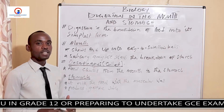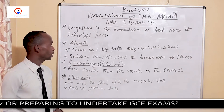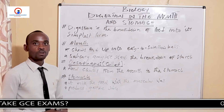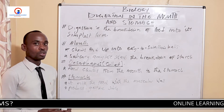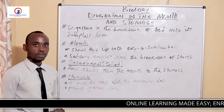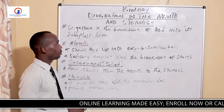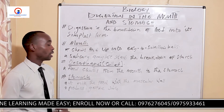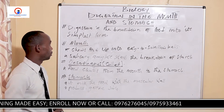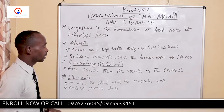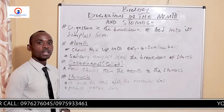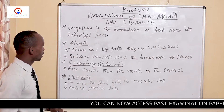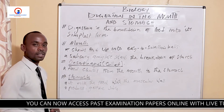We need to understand that food needs to be broken down into simple forms. It is very important that the food we eat should be digested and dissolved in the body. The blood is responsible for transporting the dissolved food substances we eat to different parts of the body, so it is very important that food is broken down into simpler forms.